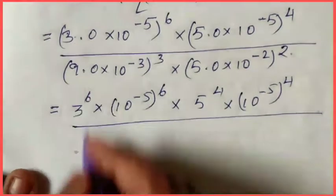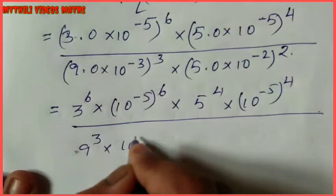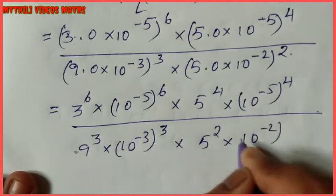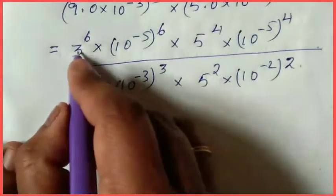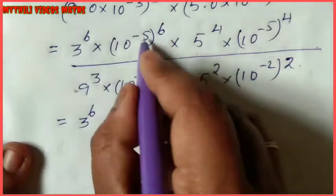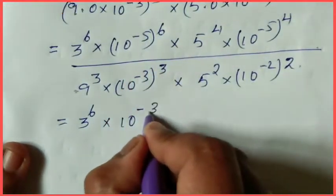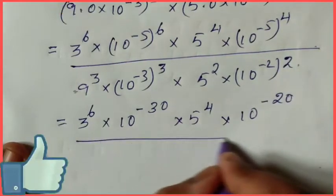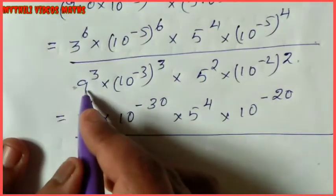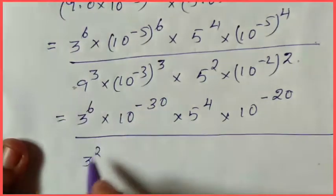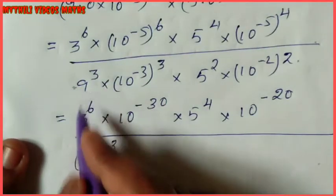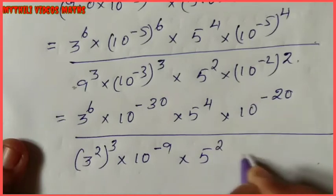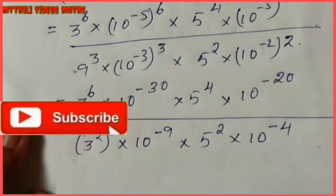Separating the terms: numerator gives 3^6 × 10^(minus 5 × 6) into 5^4 × 10^(minus 5 × 4). Denominator: 9^3 × 10^(minus 3 × 3) into 5^2 × 10^(minus 2 × 2). Simplifying powers: minus 5 × 6 = minus 30, minus 5 × 4 = minus 20. Denominator powers: minus 3 × 3 = minus 9, minus 2 × 2 = minus 4.